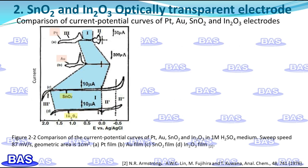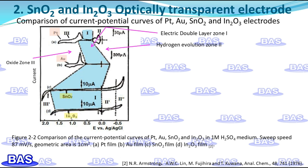Let's compare the current-potential curves of platinum, gold, tin oxide, and indium oxide electrodes in 1 mol/L sulfuric acid medium. The current-potential curve of each electrode can be divided into three main regions: the double layer zone 1, the hydrogen evolution zone 2, and the oxide zone 3. For platinum and gold electrodes, these zones have been extensively studied. The potential width of zone 1 changes with the potential sweep speed. The most obvious difference between the two metal film electrodes is that the potential window of the gold electrode in zone 1 is wider.